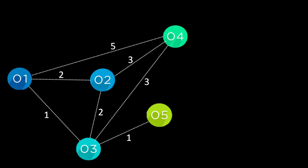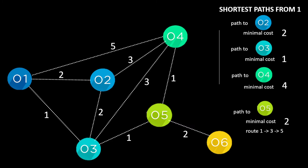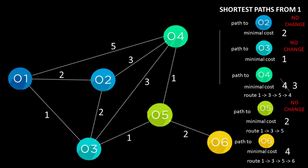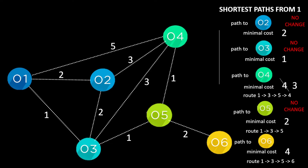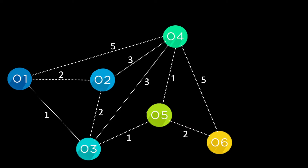From node 5 we can go to node 4 with a cost of 1, and a new node — node 6 — with a cost of 2. No change to nodes 2 or 3. For node 4, there is a change: a shorter path of 1+1+1=3, via the route 1 → 3 → 5 → 4. Path to node 5 has no change. The minimal cost for node 6 will be 4, since 1+1+2=4. Checking further, we can go from node 4 to node 6 with a cost of 5, but that doesn't change anything.